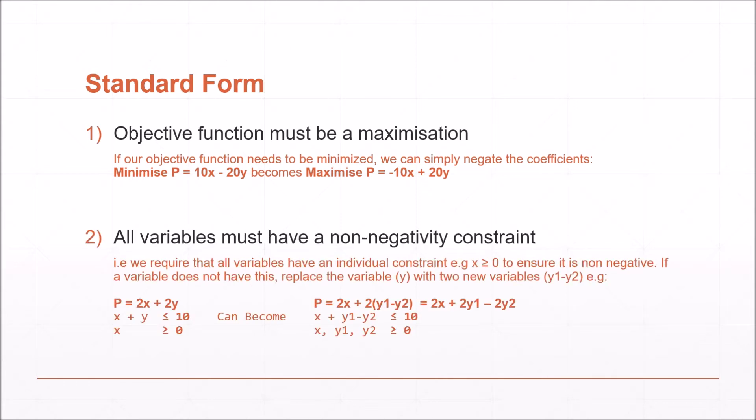Number 2: all variables must have a non-negativity constraint. In this case we have two variables. x does have a non-negativity constraint, but y doesn't. We can solve this by introducing two new variables y1 and y2, replacing every occurrence of y with y1 minus y2, and adding two new non-negative constraints for y1 and y2.